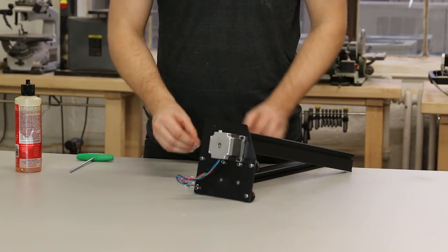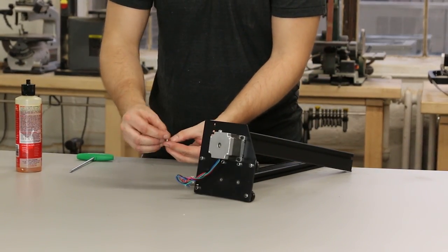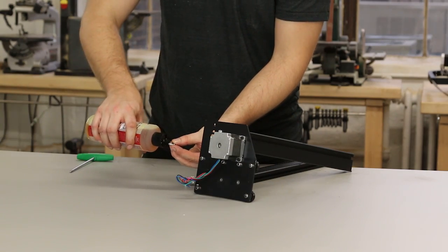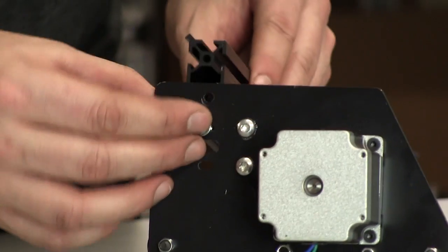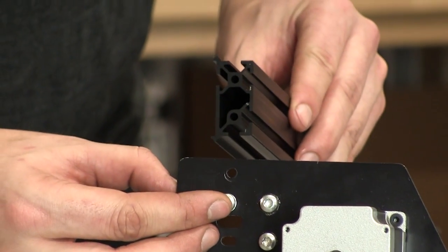Now we're going to put the second piece of maker slide onto this Y motor mount plate. You'll notice that the V-rails for this maker slide point away from the motor or to the left as it's shown on this screen.